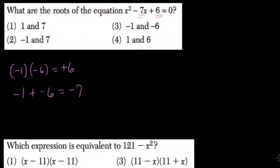Almost, right? This allows us to factor our equation into the factored form: x minus 1 times x minus 6 equals 0.